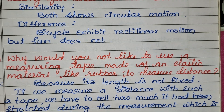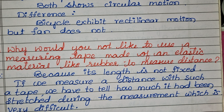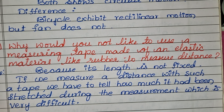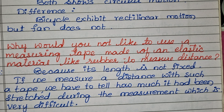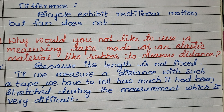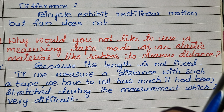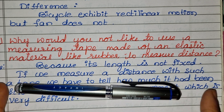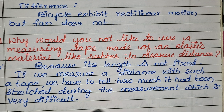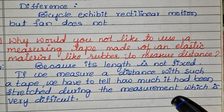Why would you not like to use a measuring tape made of an elastic material like rubber to measure distance? Because it's not fixed — due to elasticity, it will change the distance. With such a tape, we would have to determine how much it had been stretched during measurement, which is very difficult.